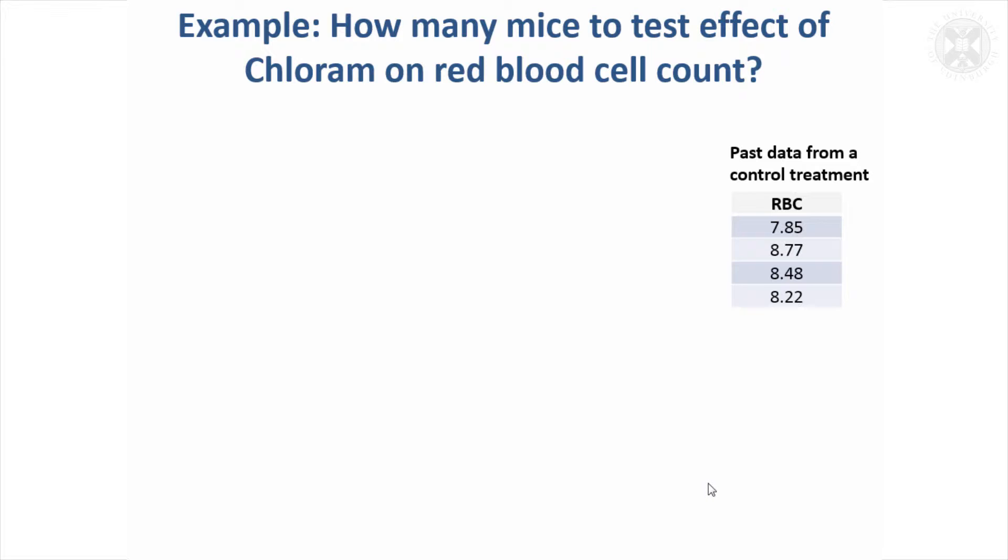We're going to have mice that have control that don't have the chlorum and another group that do have it. We've got some past data, just four values from a control treatment, that gives us a feel for how variable the data are so we can build that into the calculation.